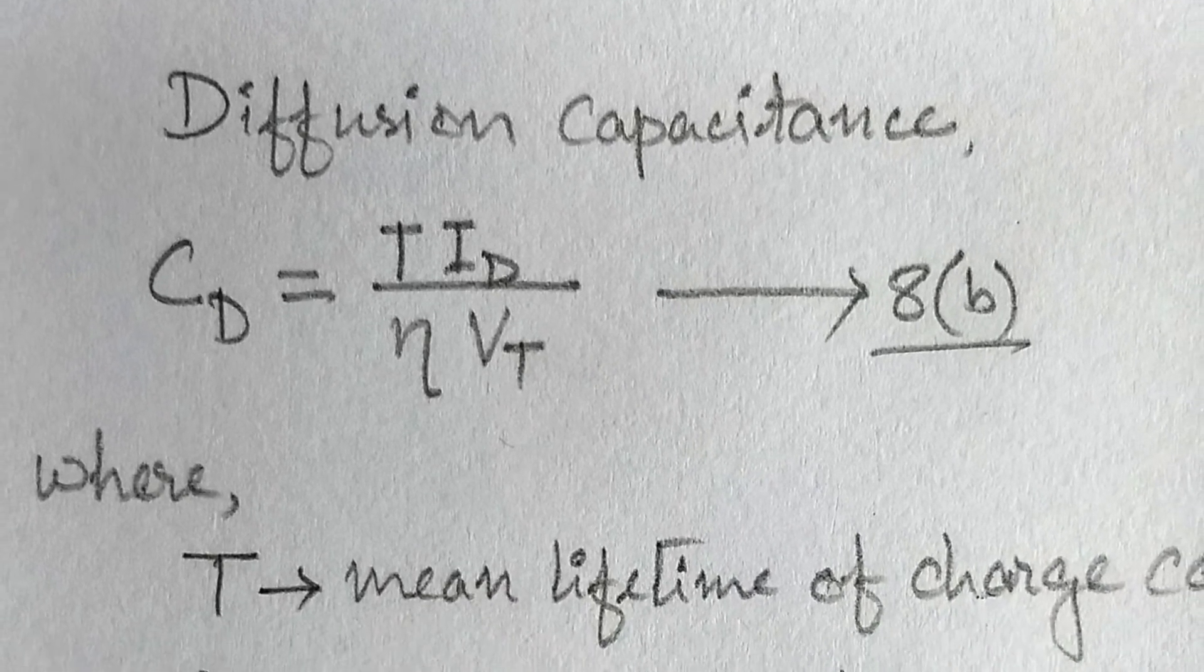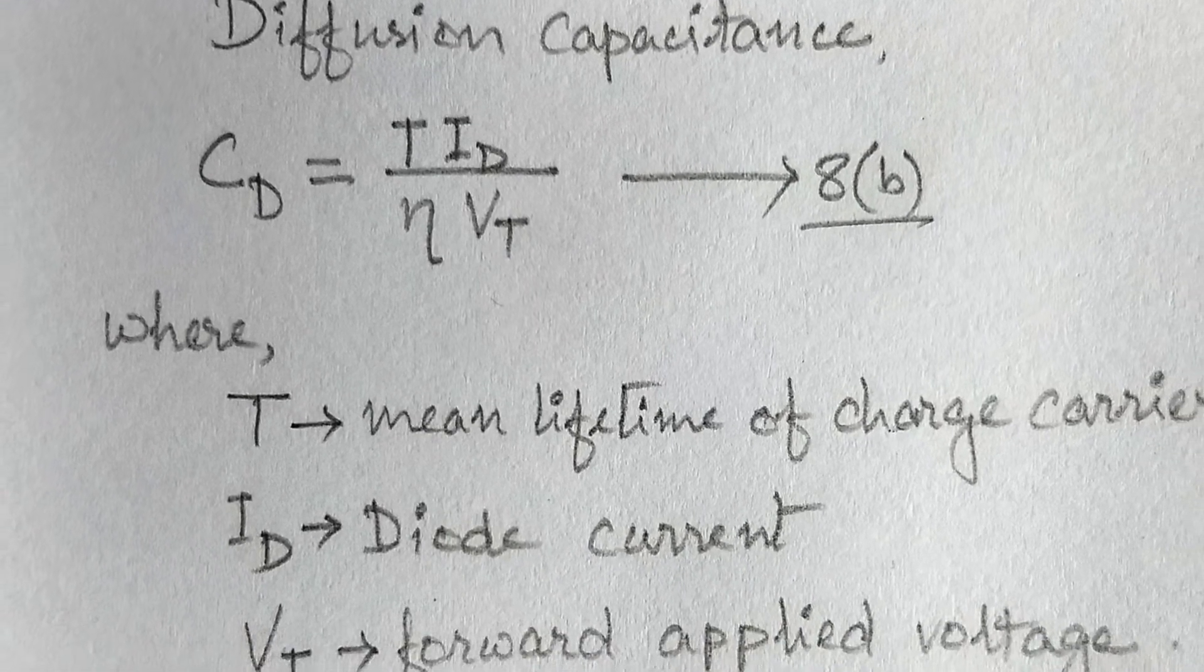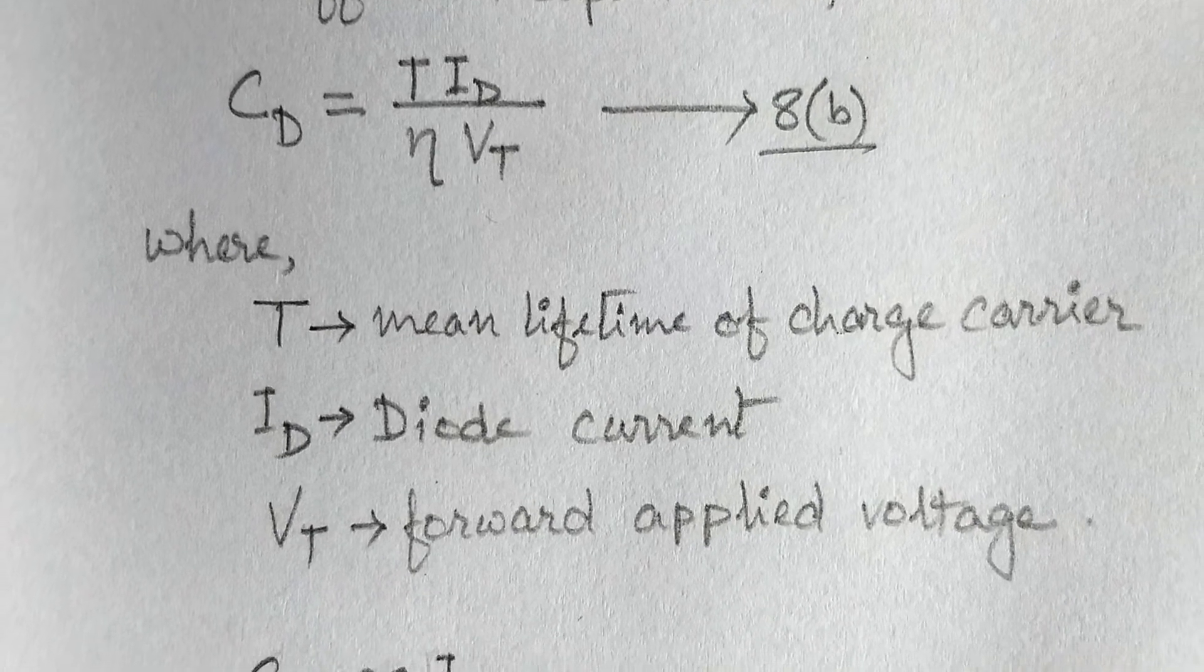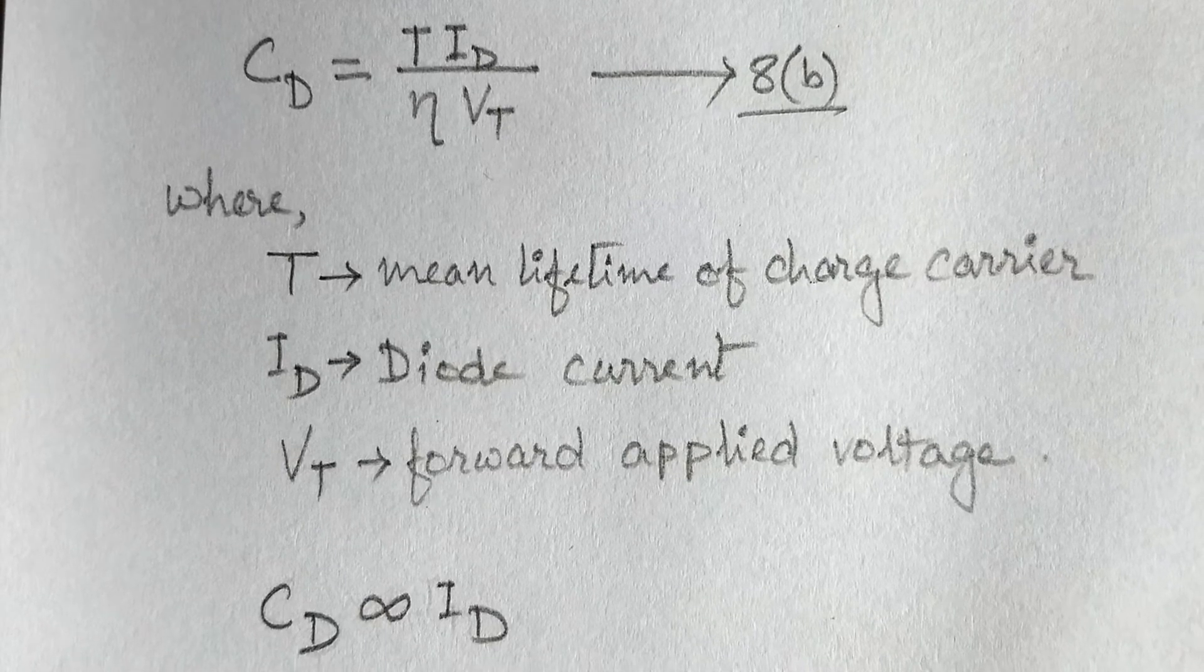Where capital T is the mean lifetime of charge carrier, Id is the diode current, Vt is the forward applied voltage. Here we can see that the diffusion capacitance is directly proportional to the diode current.